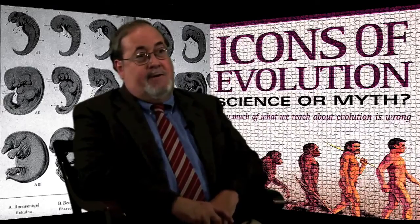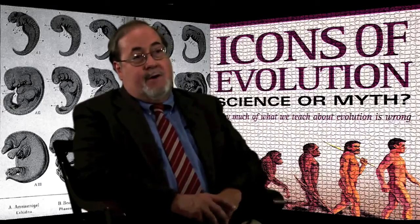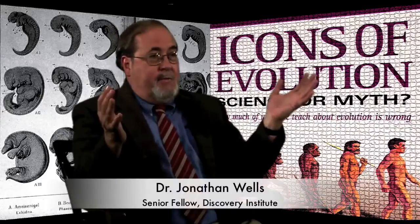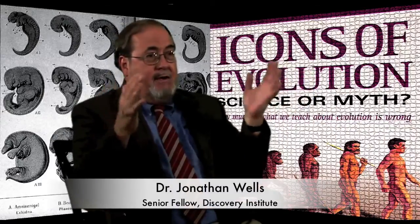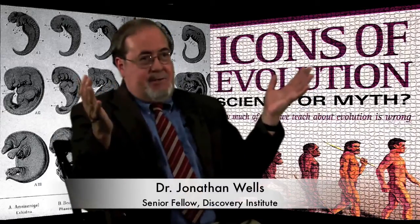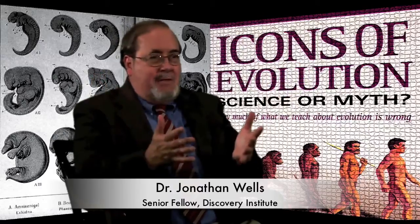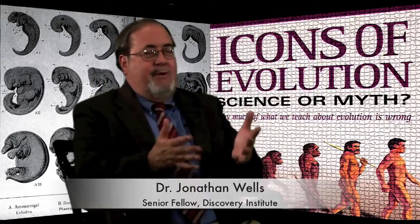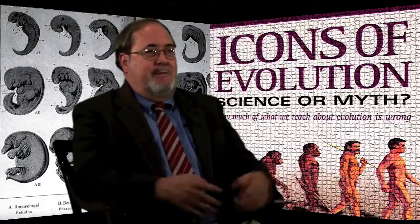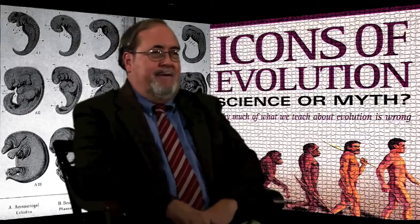It doesn't fit Darwin's pattern at all. In fact, if you were to follow Darwin's logic, you'd have to say the different classes of vertebrates had different ancestors and then for some unknown reason became similar halfway through development and then became dissimilar again. So the logic and the evidence don't fit.